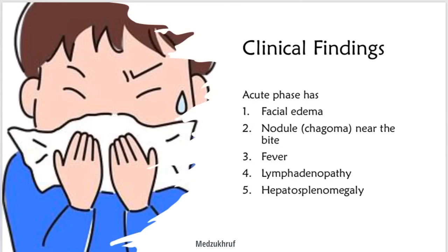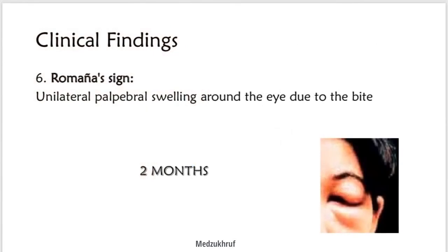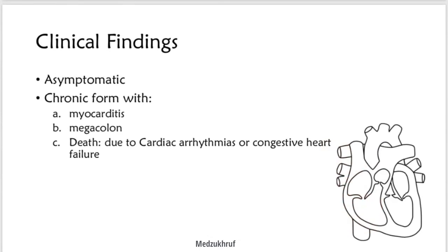Clinical findings — acute phase: facial edema, nodule near the bite, fever, lymphadenopathy, and hepatosplenomegaly. In the picture you can see the swelling around the eye area (Romaña's sign). The chronic form presents with myocarditis and megacolon, and death can occur due to cardiac arrhythmias or congestive heart failure.